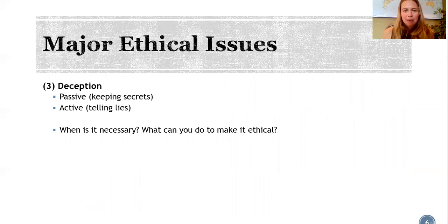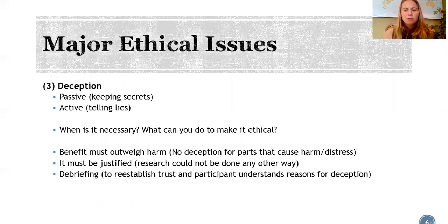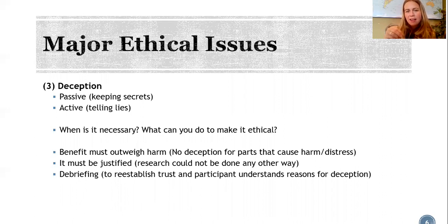The third major issue is deception. Sometimes it's necessary for participants to not know exactly what will happen to them or what the study is about — for example, to avoid participants assuming the good subject role and to make sure they're acting in a more natural way. The benefit of not telling the whole truth must outweigh the harm, and deception can never involve any part of a study that could cause harm or distress to the participant. They have to know if that's going to happen.